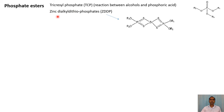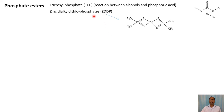ZDDP, which we have discussed as an additive for anti-wear and antioxidant purposes, can also be used as a lubricant and is considered a synthetic lubricant. As noted, it has excellent boundary lubrication properties.